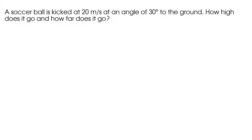Here is an example of non-horizontal projectile motion. A soccer ball is kicked at 20 meters per second at an angle of 30 degrees to the ground. How high does it go and how far does it go? We're always going to start the same way, which is with a picture. I'm launching at 20 meters per second at 30 degrees.